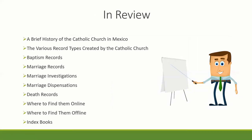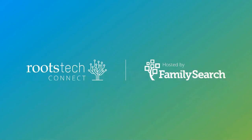In review, we talked about a brief history of the Catholic Church and the struggle between the Mexican government and how it might have affected the creation of records. The various record types created by the Catholic Church — we focused on baptismal records, marriage records, marriage investigations, marriage dispensations, and death records. And then we talked about where to find them online at FamilySearch.org, also where to find them offline, and index books to help you. Thank you, and make sure to check out all the other great presentations. I want to thank RootsTech for this opportunity.